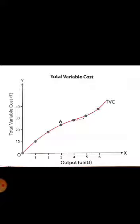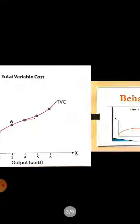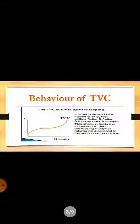Second phase is eventually TVC increases at an increasing rate, meaning after this total variable cost increases at increasing rate. A little more output and TVC increases in increasing trend. This is why this curve is S-shaped.